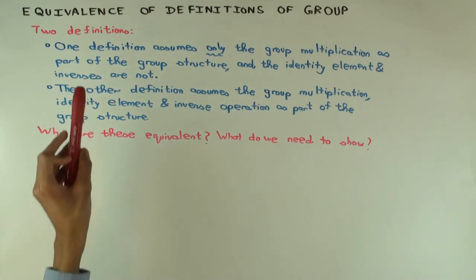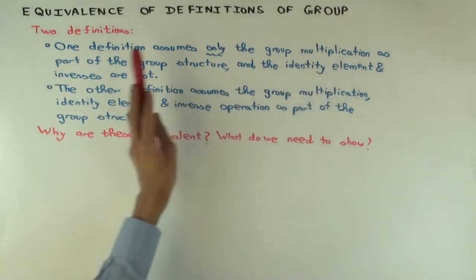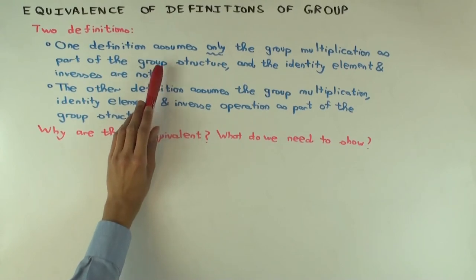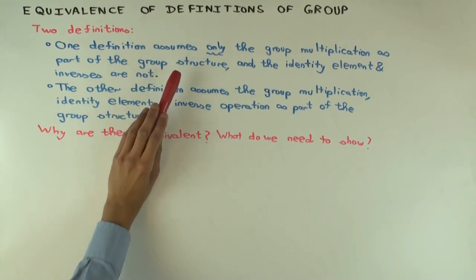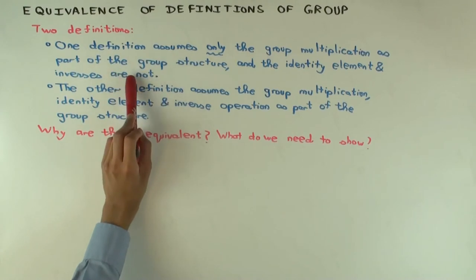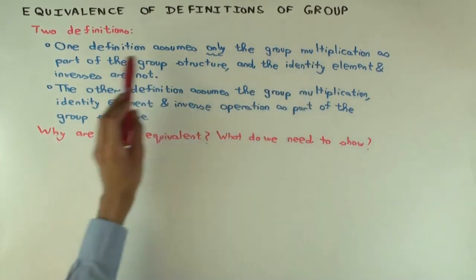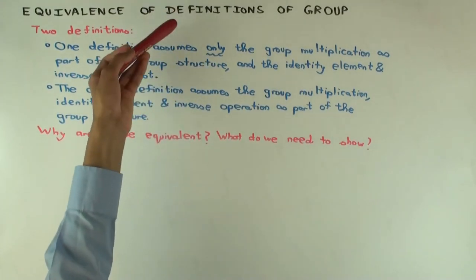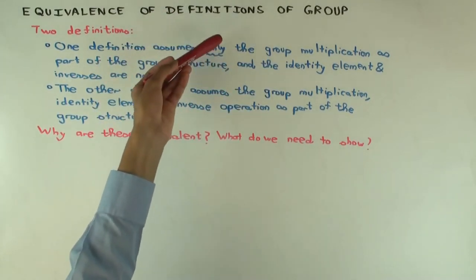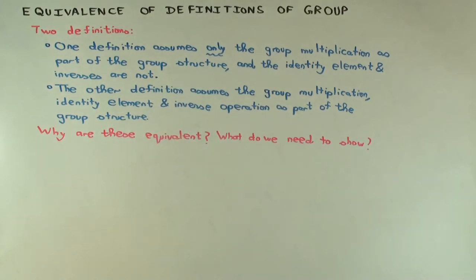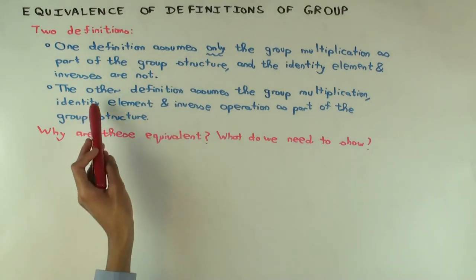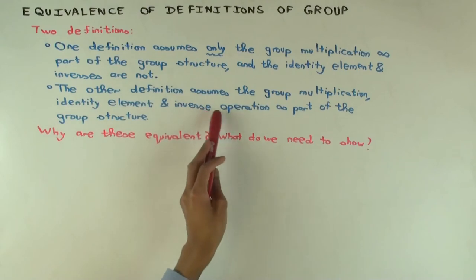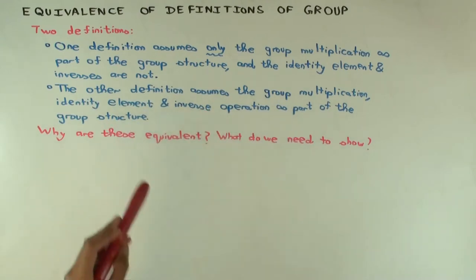One definition assumes only the group multiplication as part of the group structure, and then says that multiplication is associative, it has an identity element, and every element has a two-sided inverse. So the identity element and the inverses are not, in that definition, a part of the group structure — they're just additional conditions that the group operation has to satisfy. In the other definition, the group multiplication, identity element, and inverse operation are all part of the group structure.